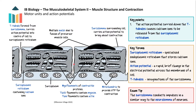Remember, the T-tubules fold into the muscle fibre. Because they fold inwards, the action potential passes very close to the sarcoplasmic reticulum, which is housing lots of calcium ions. The action potential passing down the T-tubules causes calcium ion channels to open in the sarcoplasmic reticulum, so calcium ions pass out of the sarcoplasmic reticulum into the sarcoplasm.